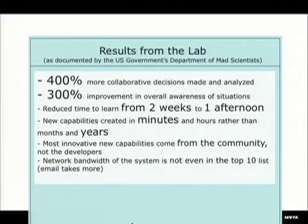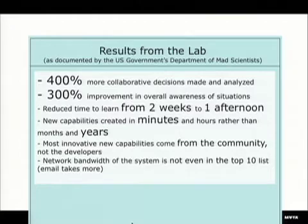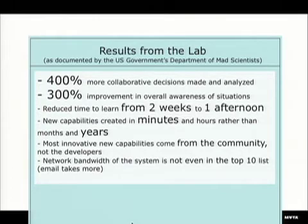This was actually documented by the U.S. government's Department of Mad Scientists — not even joking. There is a U.S. Department of Mad Scientists, it's called DARPA. They invented the Internet when it was called the ARPANET. We found a 400% increase in collaborative decision-making, a 300% increase in overall awareness of all the information. People went from the old system, which took two weeks, to an afternoon to learn how to use it. Most new capabilities are created in a few minutes, dragged into shared products, and 10,000 people can use them and vote on the most popular tools. The community develops things that used to take three years, and it doesn't even take up significant network bandwidth. This is massively in use today, and it shows what happens when you start paying attention to nature's design patterns.